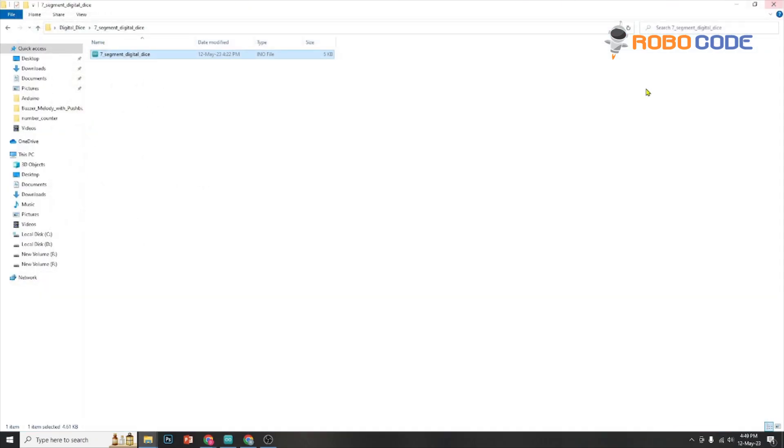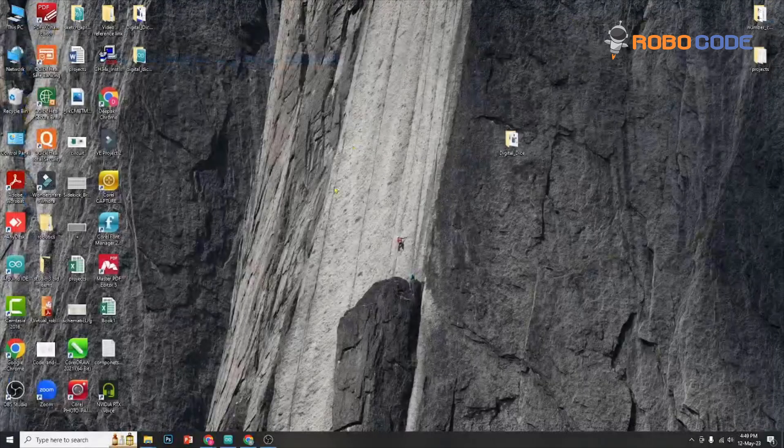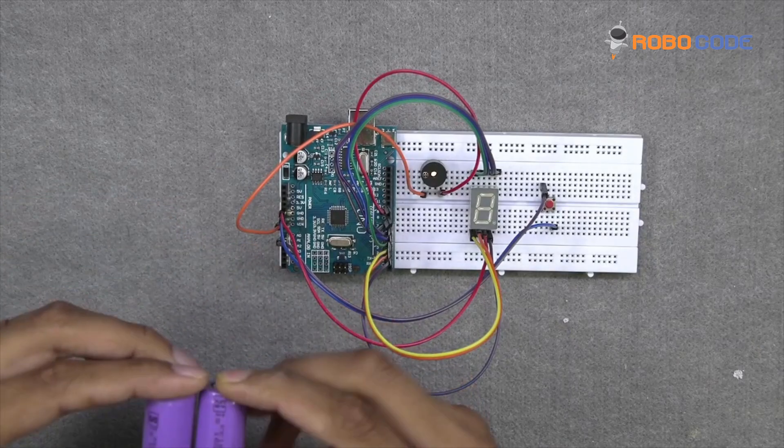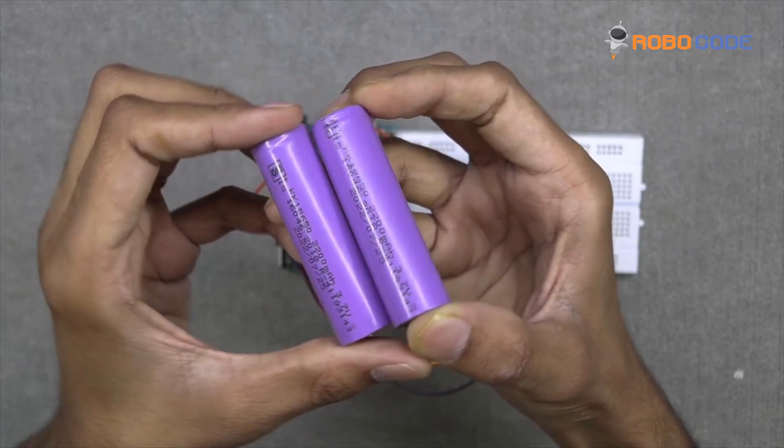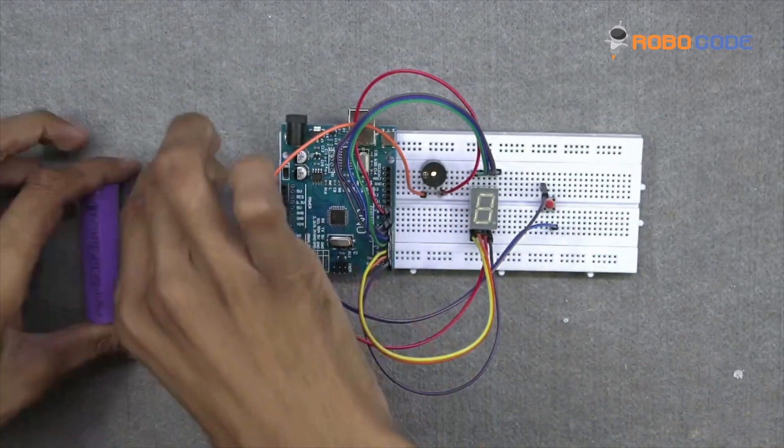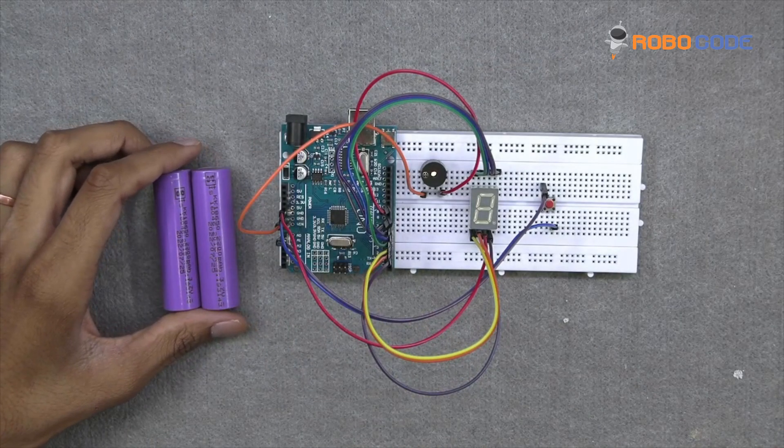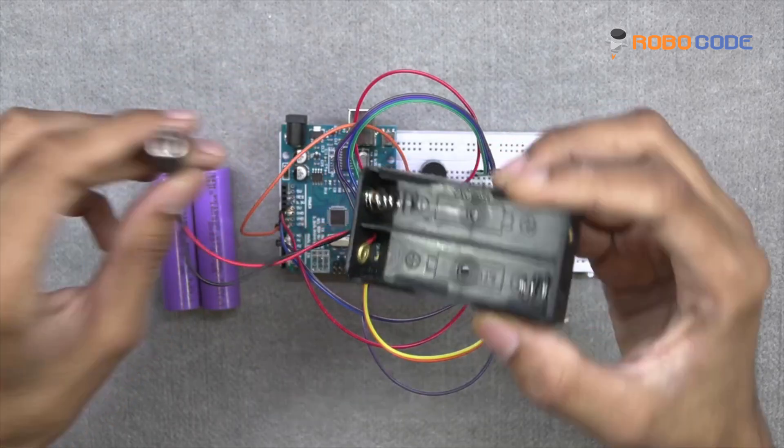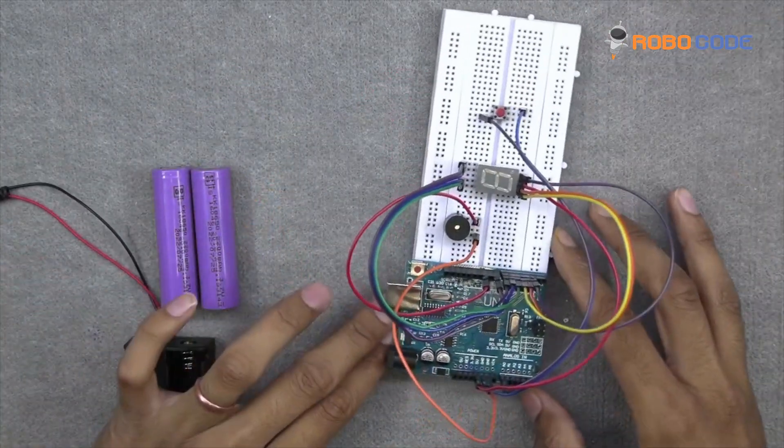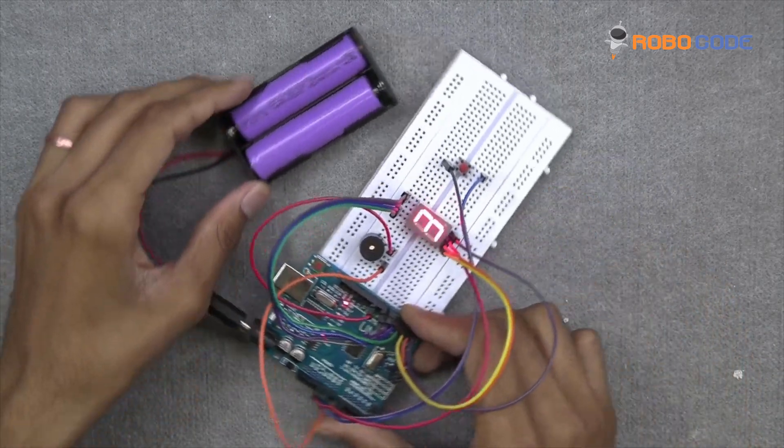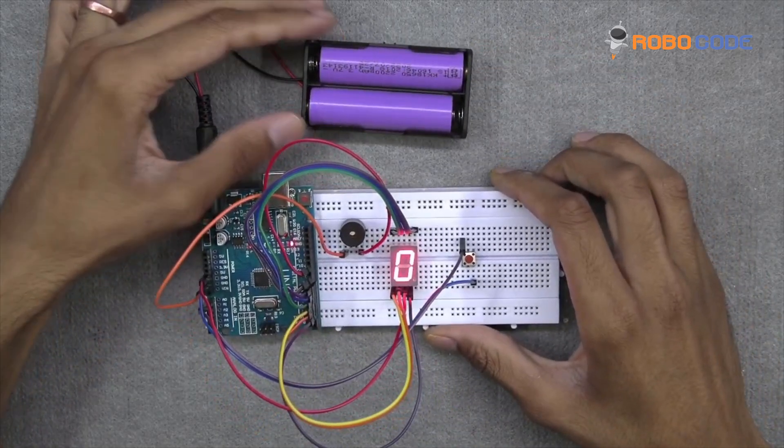This is how you upload the code. After the code is uploaded, we will take 3.7 volt lithium battery and the holder to put those batteries inside the holder. Once that is done, we will plug this to the Arduino UNO board.